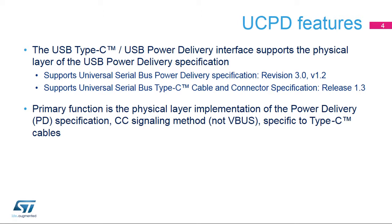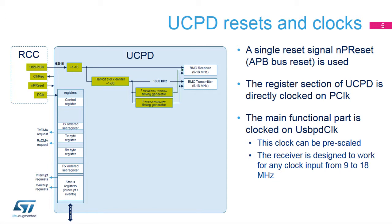Regarding the PHY, only the CC signaling method is supported, so the Type-C cable is required. The Reset and Clock Controller (RCC) is in charge of resetting the UCPD unit by asserting the NP-Reset signal. It provides the following reference clocks: PClock, which is the APB clock used to access memory-mapped registers, and USB PD clock, which is the main functional clock. USB PD clock can be pre-scaled to obtain the half-bit clock required by Bi-Phase Mark Coding. For the timings T-transition window and T-interframe gap, clock frequency uncertainty should be taken into account. The UCPD module asserts clock-req to the RCC in order to exit a clock-gating low-power state.